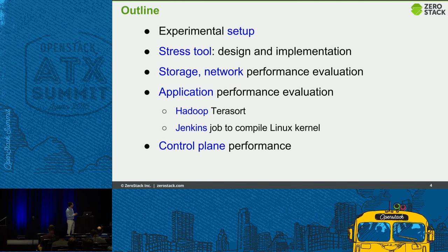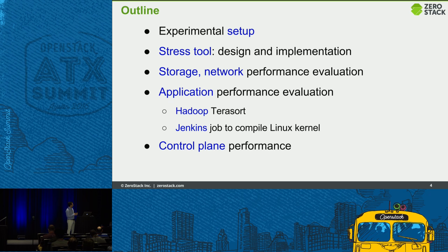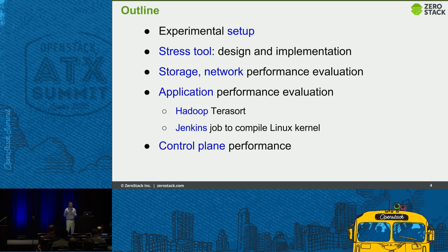Let me go over a brief outline. In the beginning, I'll go over the experimental setup. Then we'll talk about the stress tool, designed to create different environments in the private cloud. Then Nodir will go through storage and network performance using micro benchmarks, followed by application performance evaluation for Hadoop and Jenkins. Finally, he'll go over control plane performance in terms of how API call latency changes as you increase the number of objects and entities.